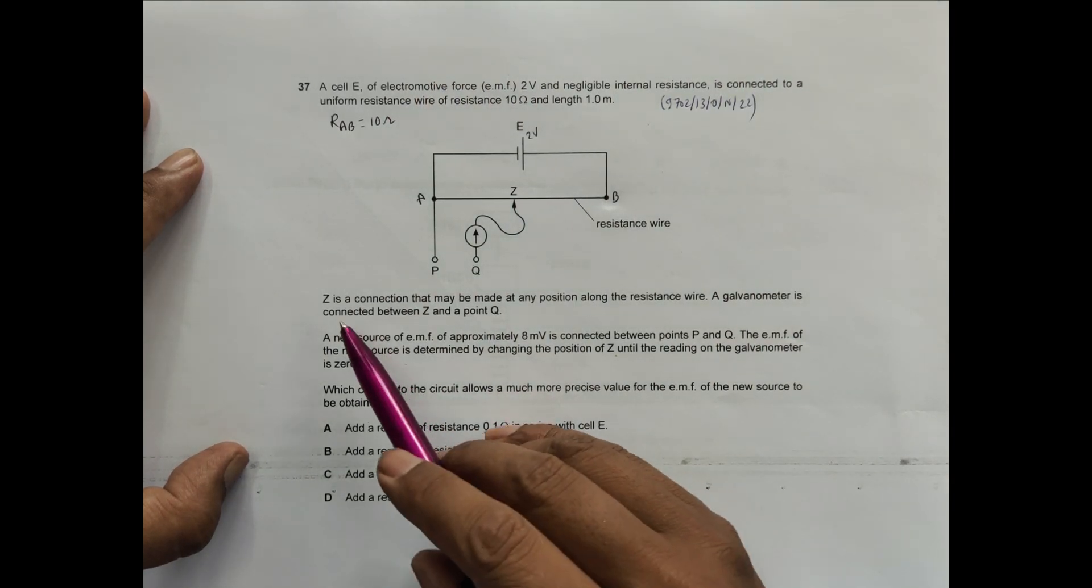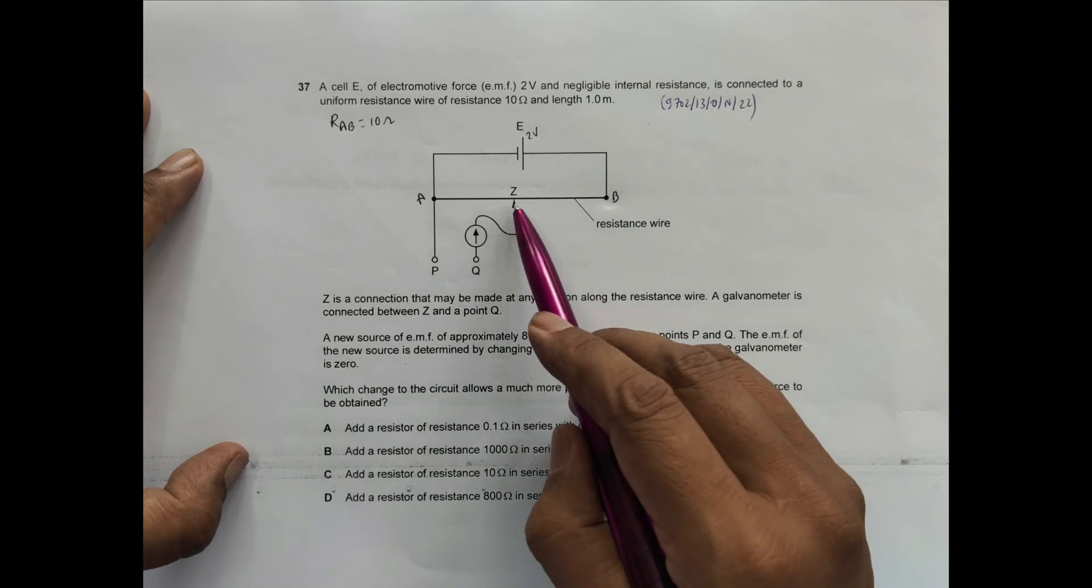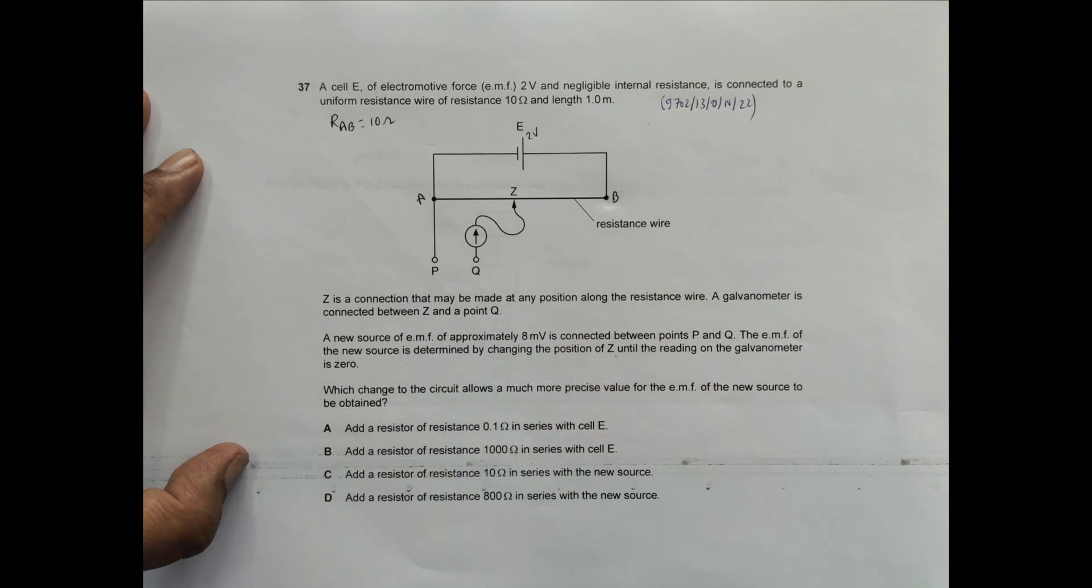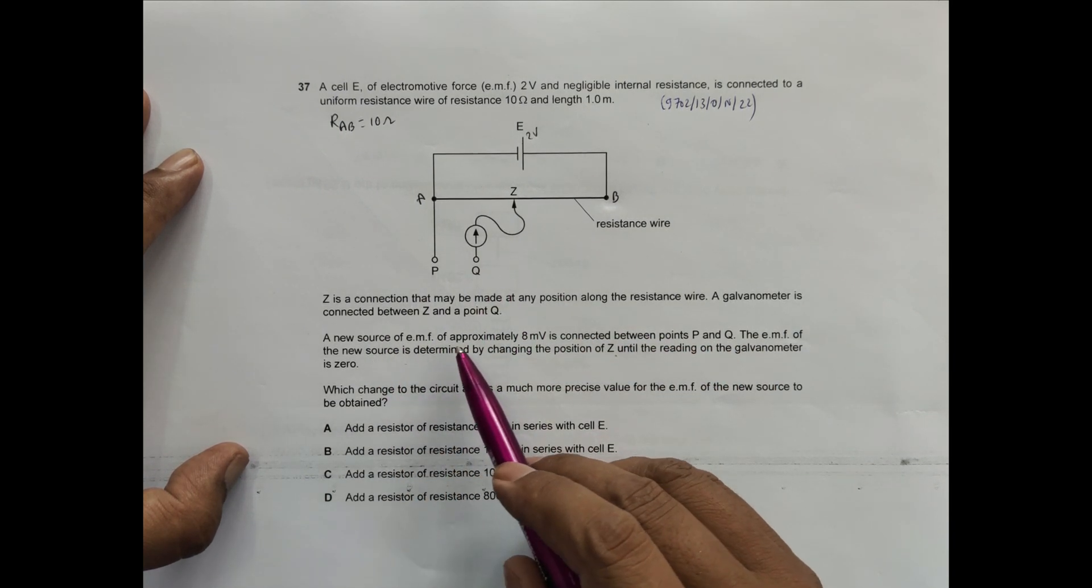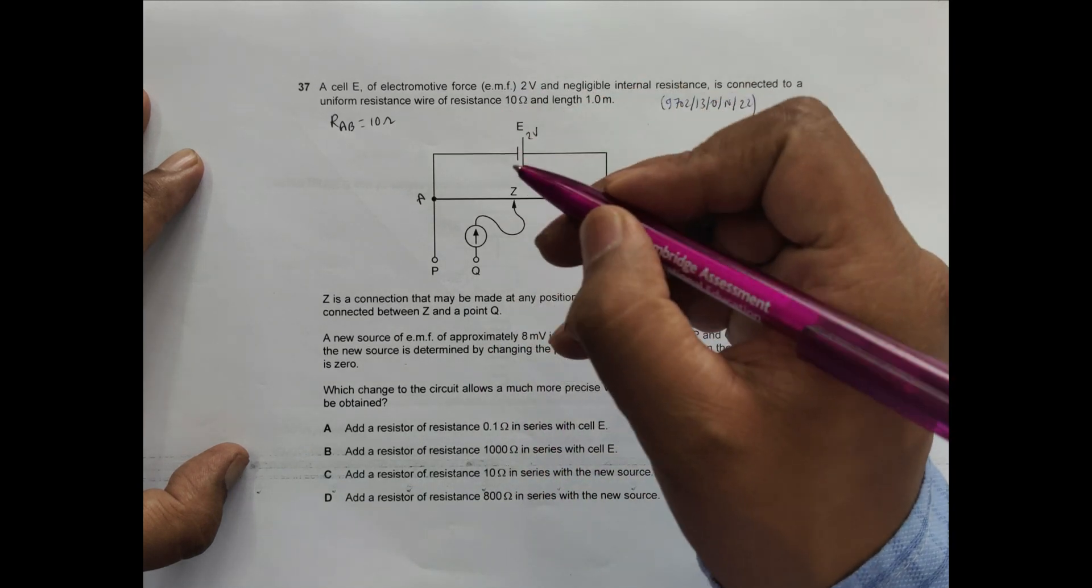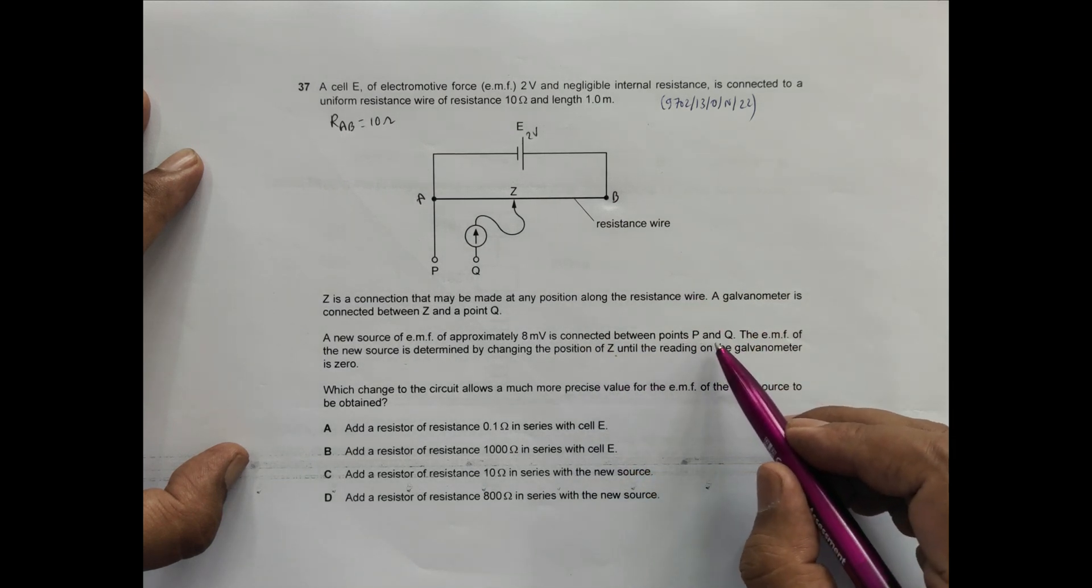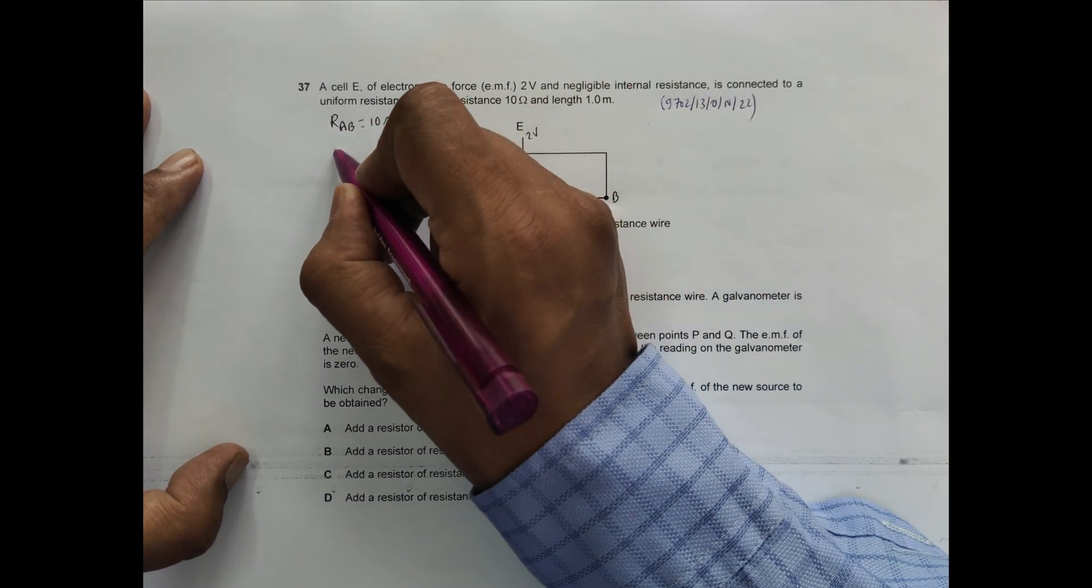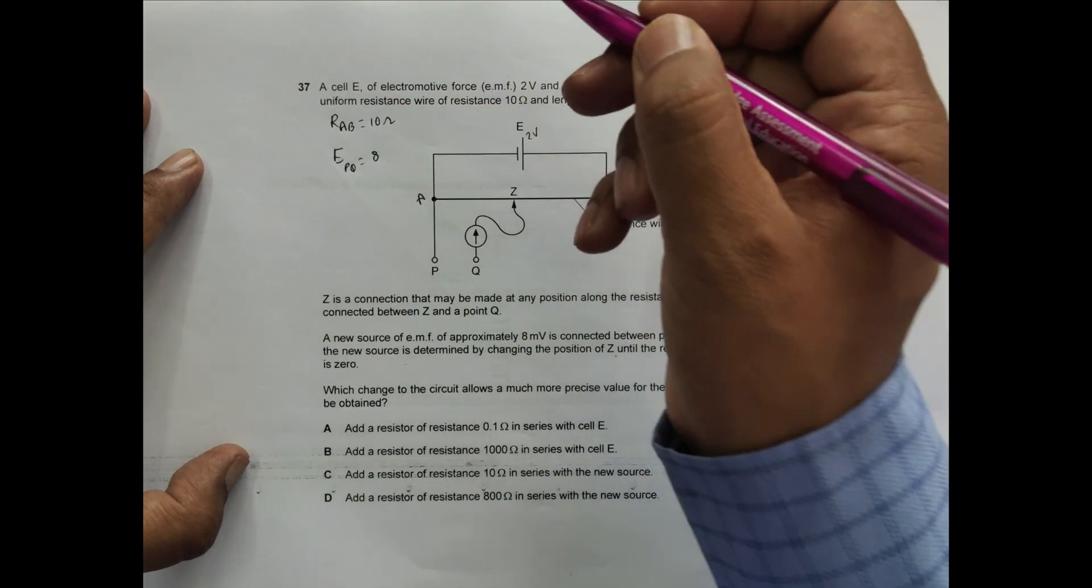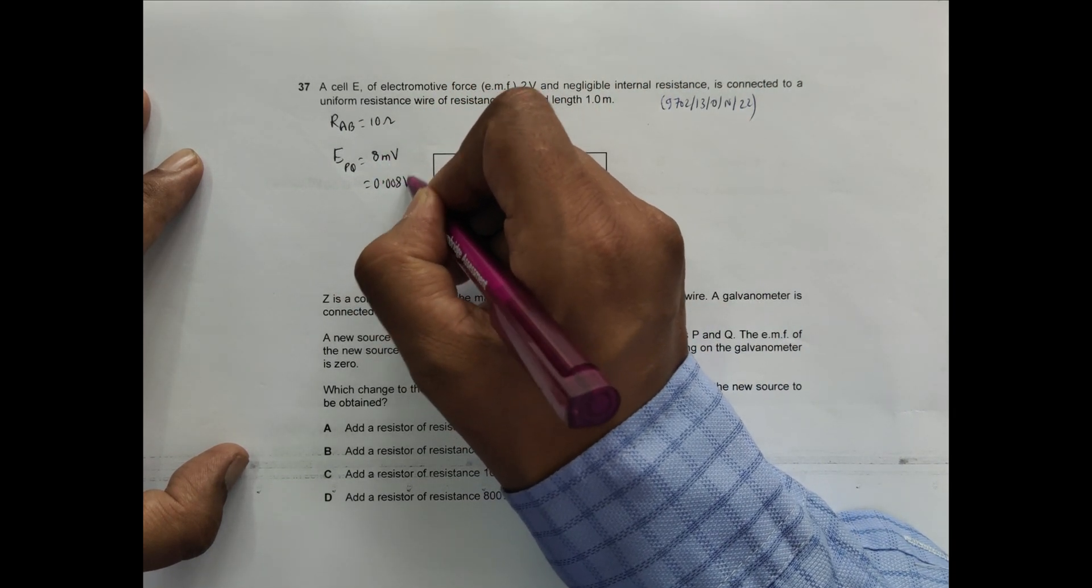J is a connection that can be made at any position along the resistance wire. A galvanometer is connected between J and point Q. A new source of EMF of approximately 8 millivolts is connected between points P and Q. So the new EMF between PQ equals 8 millivolts, which is 0.008 volts.